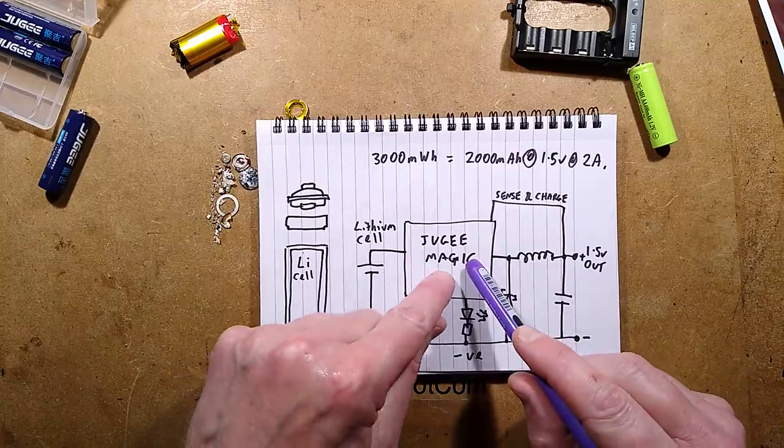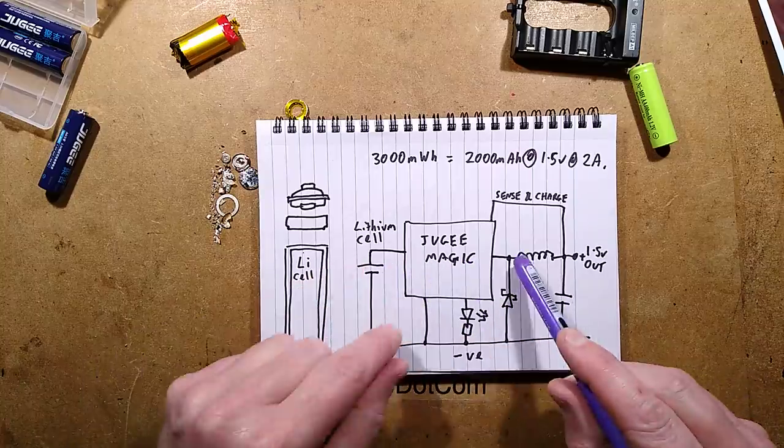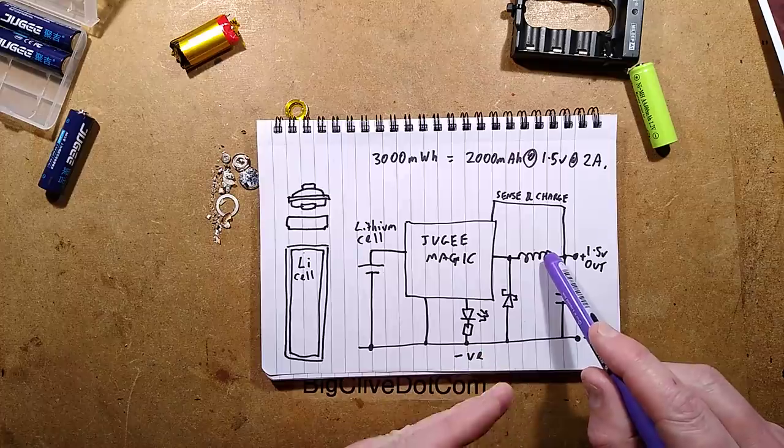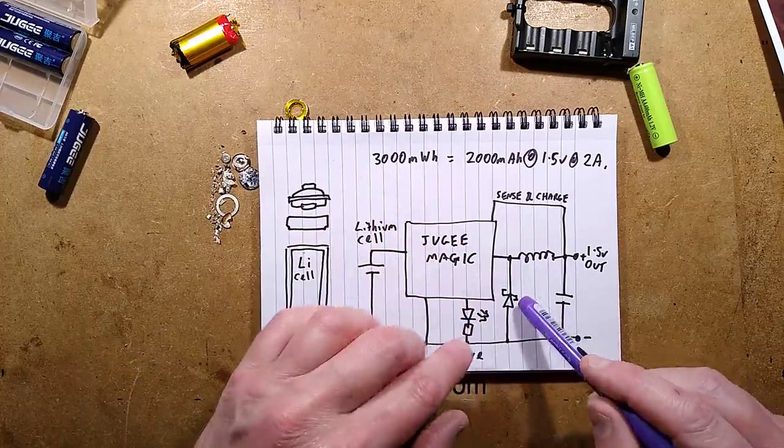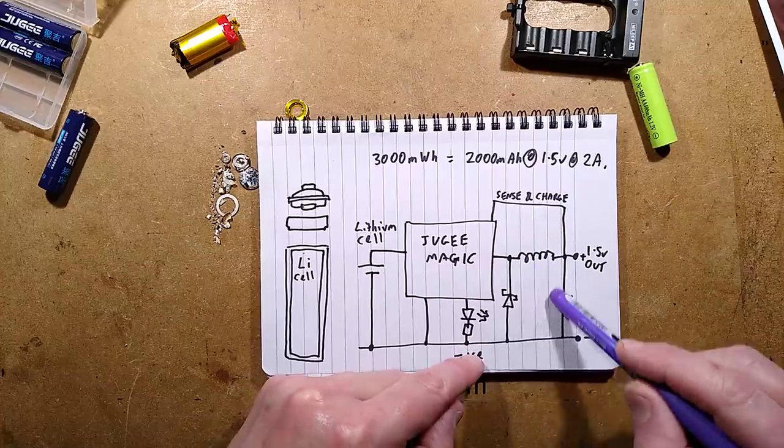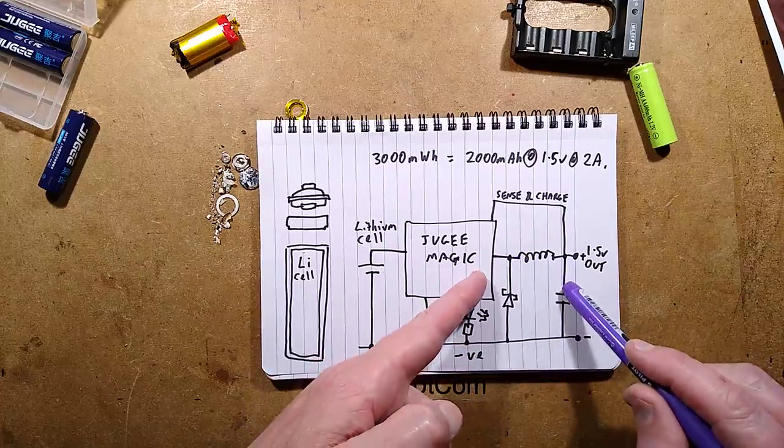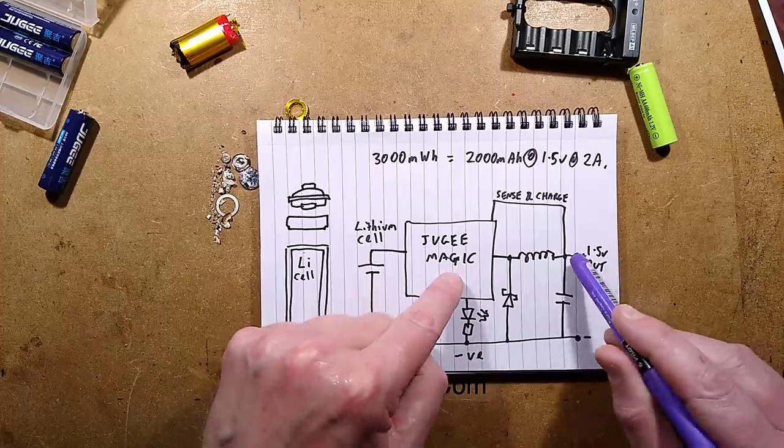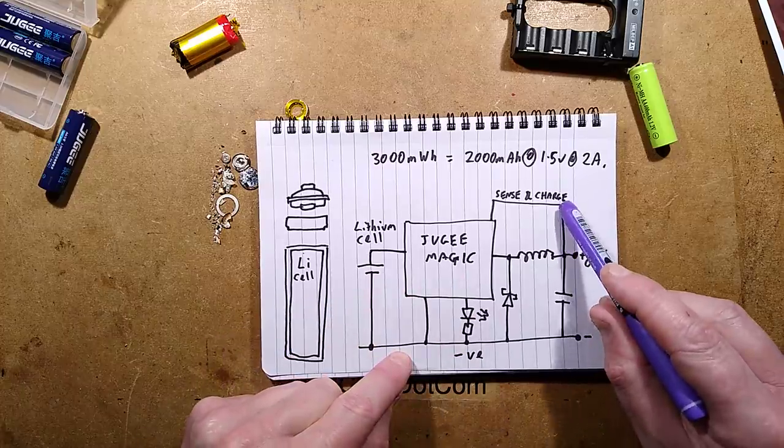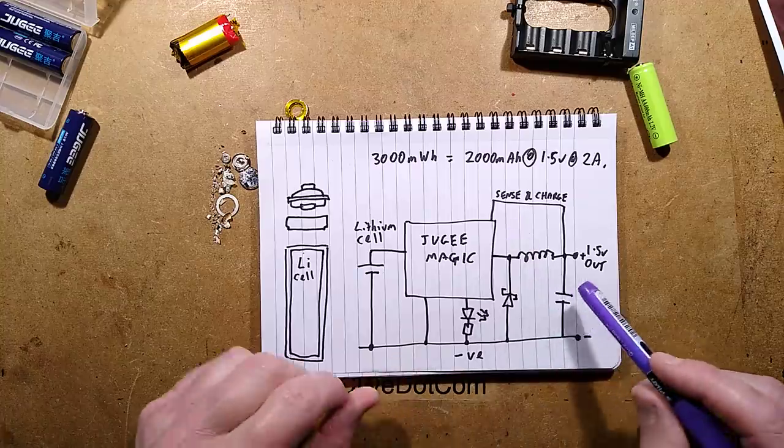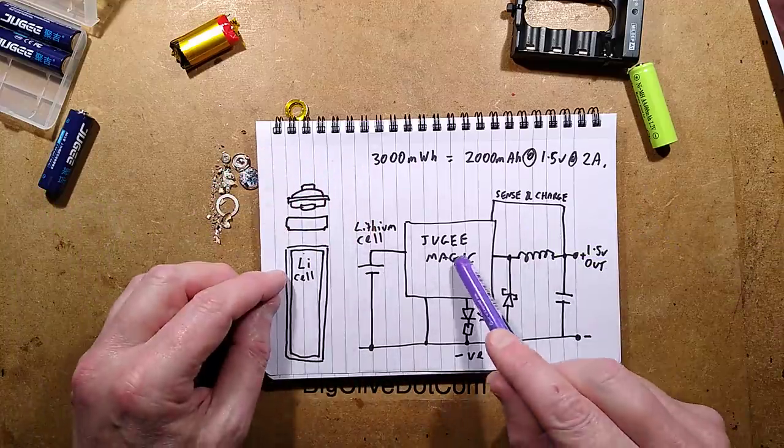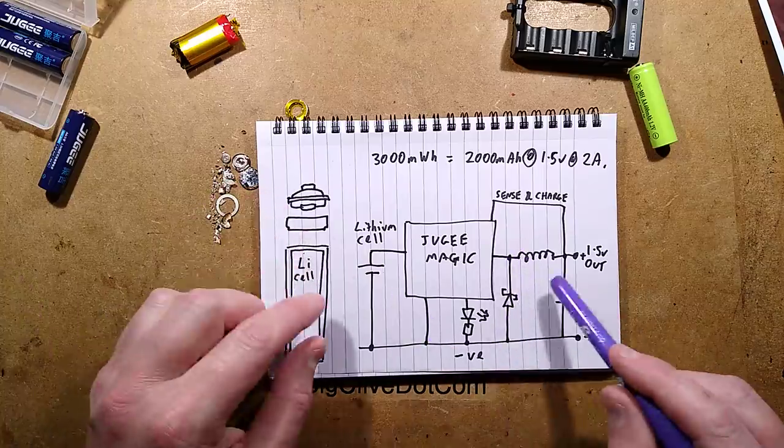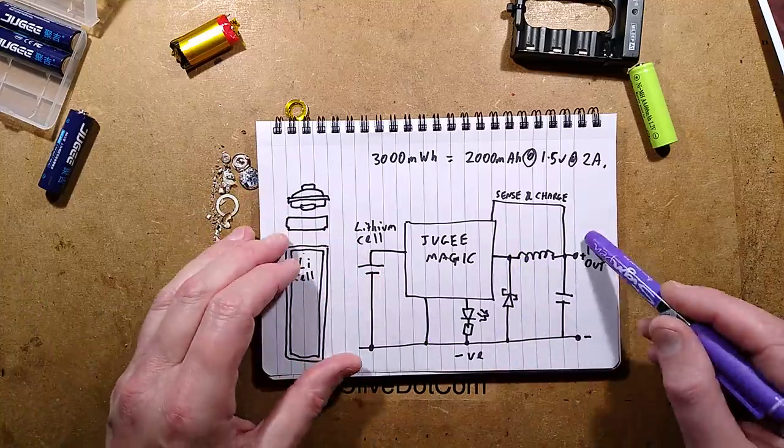It provides pulses of current from the lithium cell through that inductor where they're slowed down by the magnetic effect and that charges that capacitor. But then when the inductor's turned off it also, via what's called freewheeling, dumps more charge into the capacitor and it keeps pulsing it to maintain 1.5 volts. It senses the 1.5 volts via this sense line, so that if the voltage in that output drops too low it then provides more pulses from the lithium battery to boost it up.